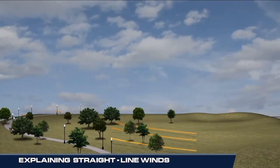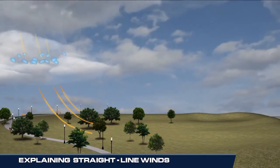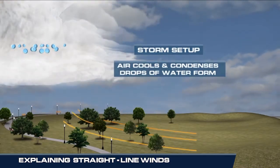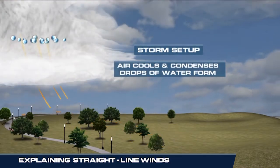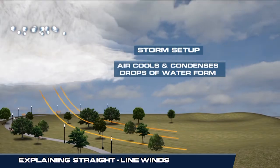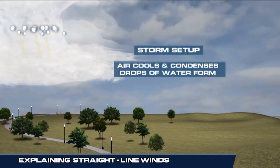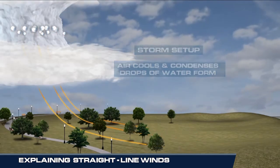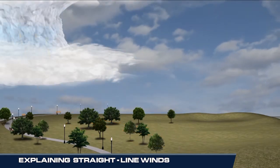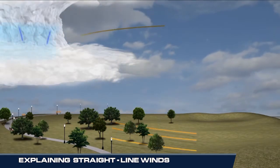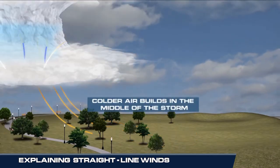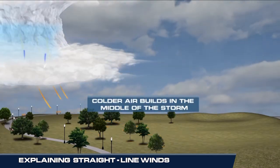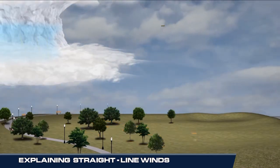The process starts with rising air within the strong updraft of a storm. The air cools, condenses, and tiny drops of water form. The droplets increase in size and then combine with others, eventually becoming too heavy and fall towards the surface within a pocket of colder air.